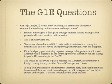Which of the following is a permissible third party communication during routine amateur radio operations? The answer is sending a message to a third party through a foreign station as long as that person is a licensed amateur radio operator. You are not allowed to send third party traffic to a station in a country the United States does not have a third party agreement with — with one exception: if the third party you are trying to pass a message to happens to be a licensed amateur eligible to be the control operator of the station you're talking to, you're okay according to Part 97. Remember that third party traffic can't deal with business, and there are restrictions on who you can talk to.